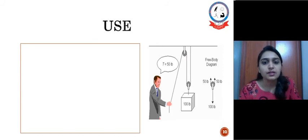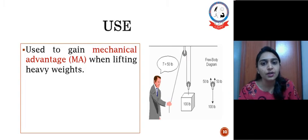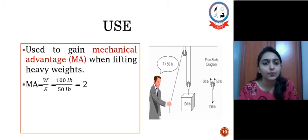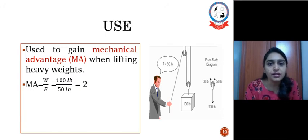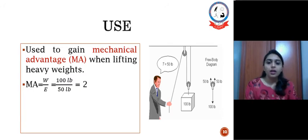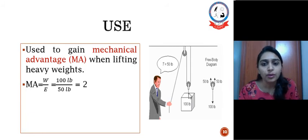Use of this movable pulley is to gain mechanical advantage when lifting heavy weights. Let's see, mechanical advantage is weight upon effort. So here in this figure we can see a 100 lb weight is being applied on a movable pulley and a fixed pulley use of this fixed and movable pulley.